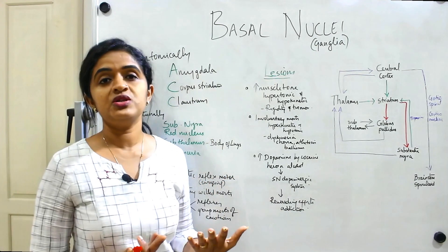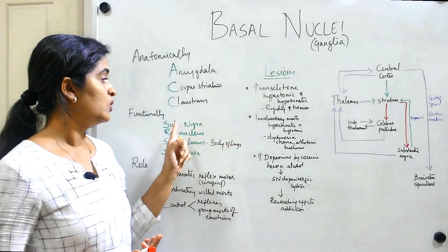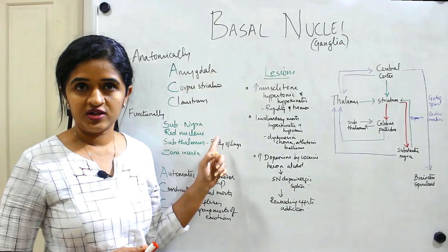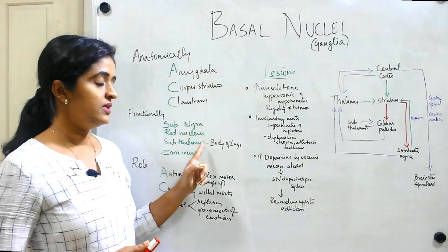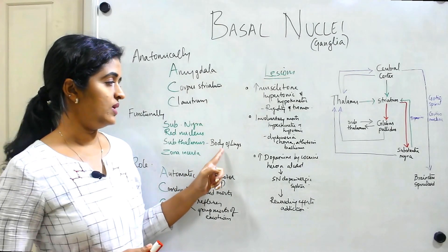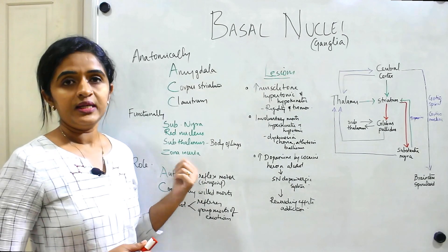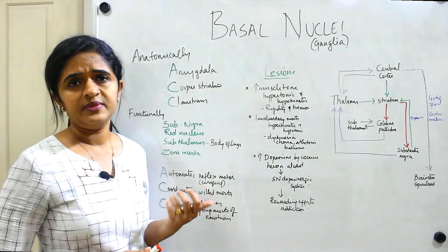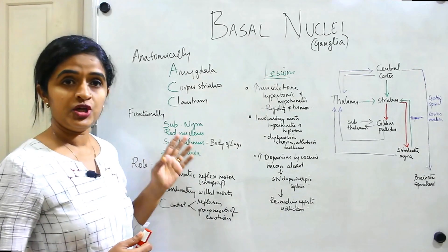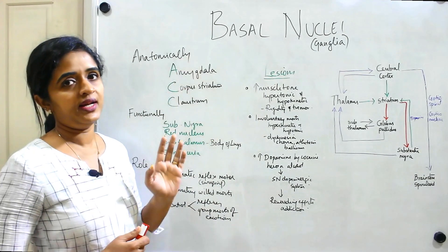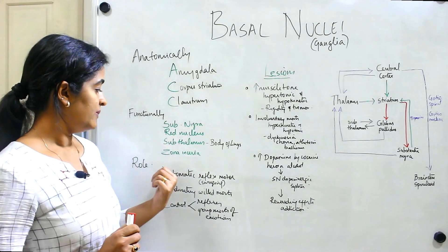When thinking about the functions of the basal nuclei, apart from these three anatomical components, you also add the substantia nigra and the red nucleus — seen in the midbrain — then the subthalamus (otherwise known as the body of Luys), and the zona incerta between the thalamus and subthalamus. These are the nuclear groups added from a functional perspective.